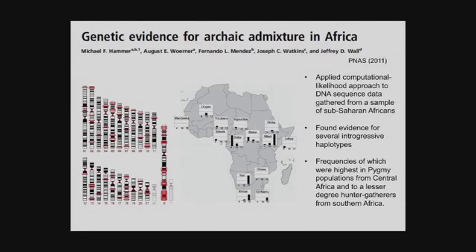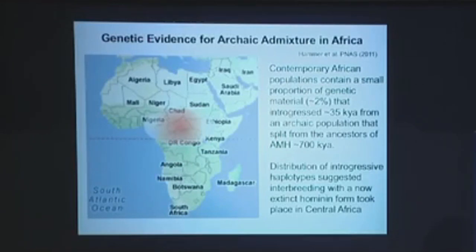We applied our approach to a dataset of sequences gathered from a range of African populations. We found evidence for several introgressive haplotypes in different parts of Africa, but the frequencies were highest in the pygmy populations from Central Africa. Using extensive computer simulations, we first showed that the data were not consistent with a model of no admixture at all, rejecting that null model. Using a likelihood approach, we were then able to make inferences about the model that involved introgression.